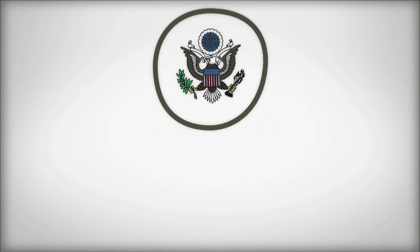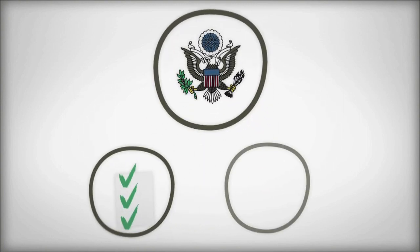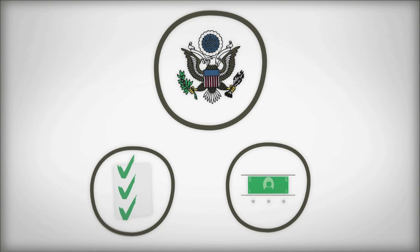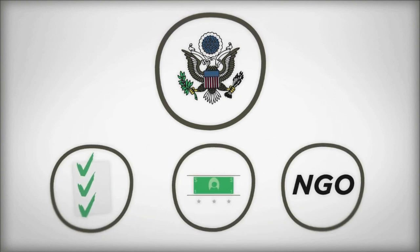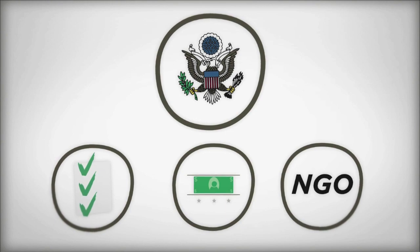The State Department manages the overall program, sets priorities, allocates resources, and funds the Fulbright Program's day-to-day administration by non-governmental organizations, such as IIE and CIES.